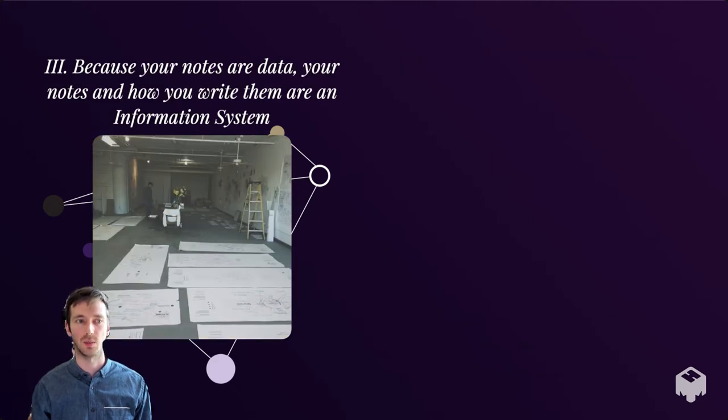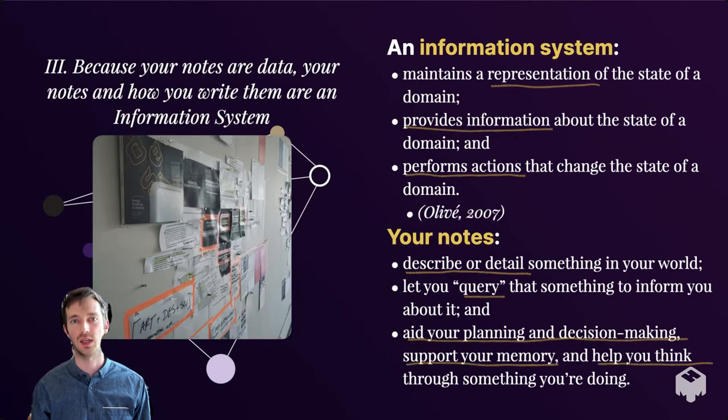Because your notes are data, we can think of them as an information system. According to Antonia Olive, an information system maintains a representation of the state of a given domain, provides information about the state of that domain, and helps you perform actions that can change that domain and its state. Your notes similarly describe something about your world, let you query that something to understand it later on. Therefore the notes aid your planning and decision making, support your memory, help you think, and help you perform actions that affect your world.